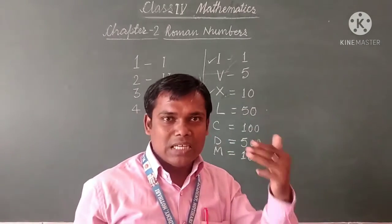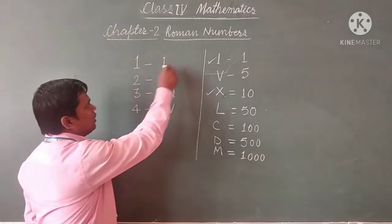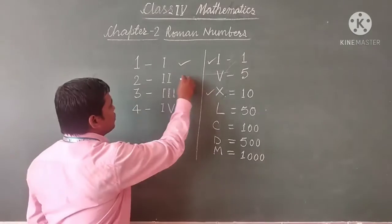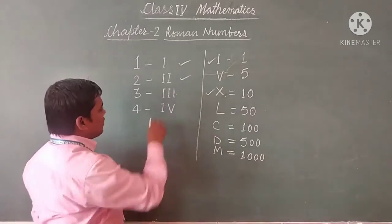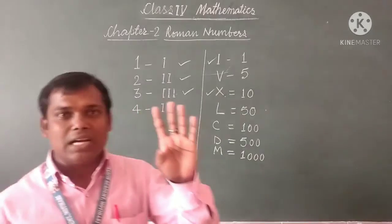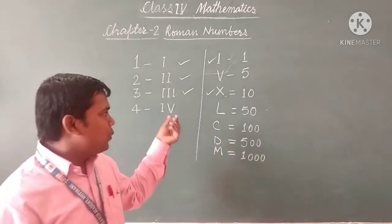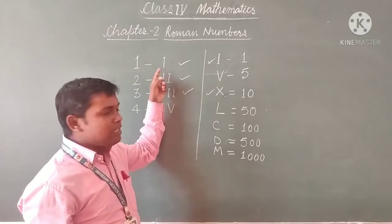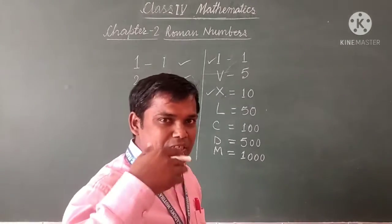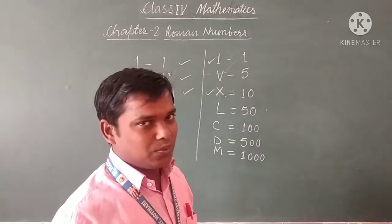The repetition of the symbol for 1 and the symbol for 10 is maximum 3 times. We cannot write them 4 times. That is why for 1 we write one I, for 2 we write two I's, for 3 we write three I's, but for 4 we do not write four I's, because the rule states we cannot use a symbol more than 3 times.